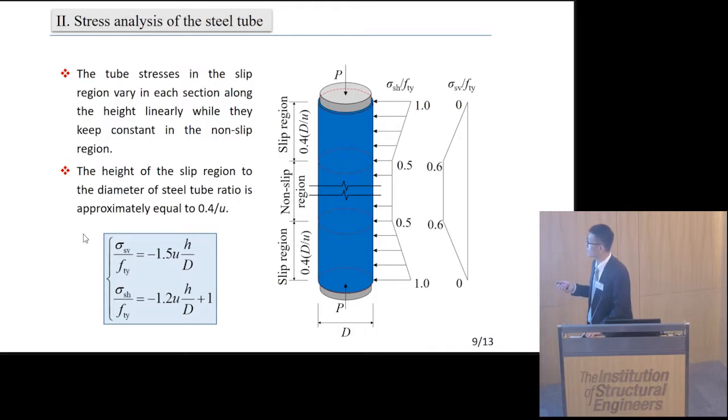This figure shows the distribution of the tube stresses at the peak load moment. The tube stresses in the slip region vary in each section linearly along the column height, while they keep constant in the non-slip region. The height of the slip region to the diameter of the tube ratio is approximately equal to 0.4 divided by μ.